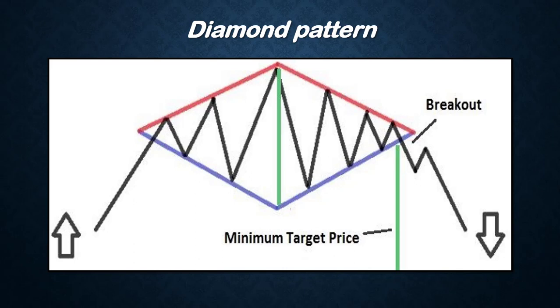The diamond chart is characterized by four limited trend lines representing two support lines and two resistance levels, which respectively connect the most recent lows and highs. The price fluctuation initially widens and then narrows in the chart pattern.